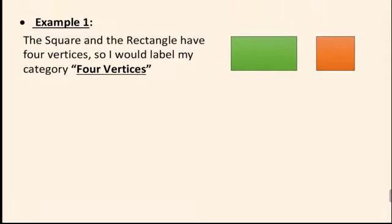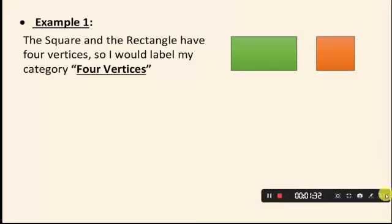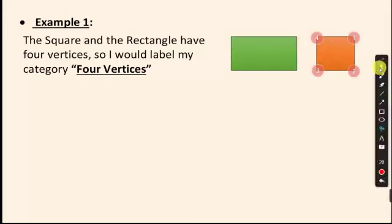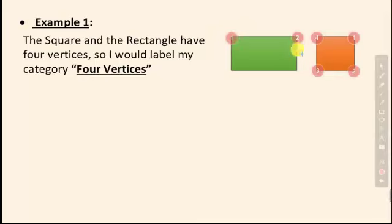Let's see an example. Here I have a square and a rectangle. How many vertices does the square have? I have four vertices in the square — one, two, three, four. What about the rectangle? One, two, three, four. So I have four vertices in the square and four vertices in the rectangle. I can put them in a category and name it 'four vertices.' That's how I can classify shapes.